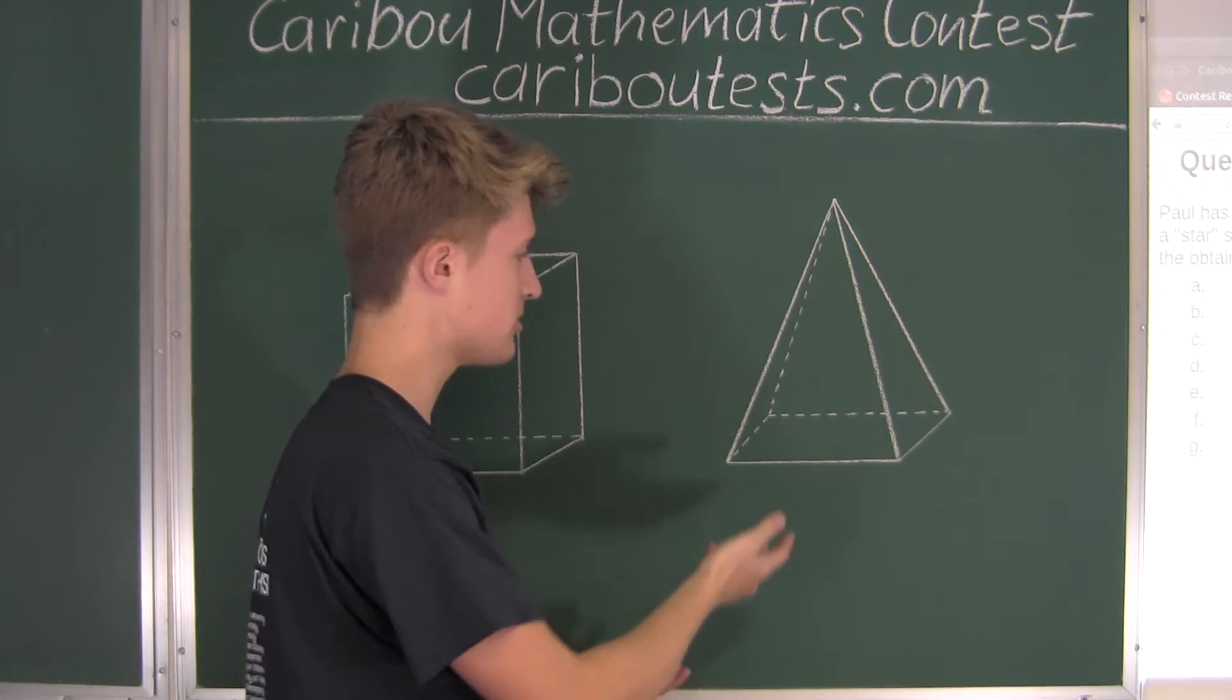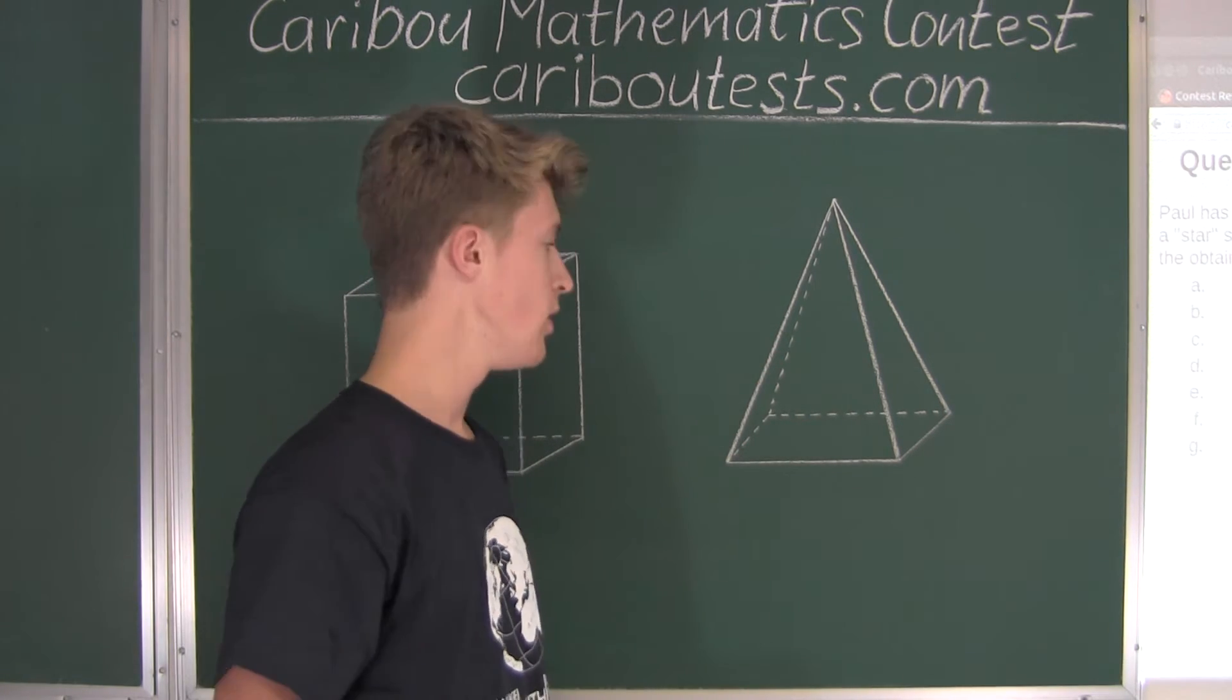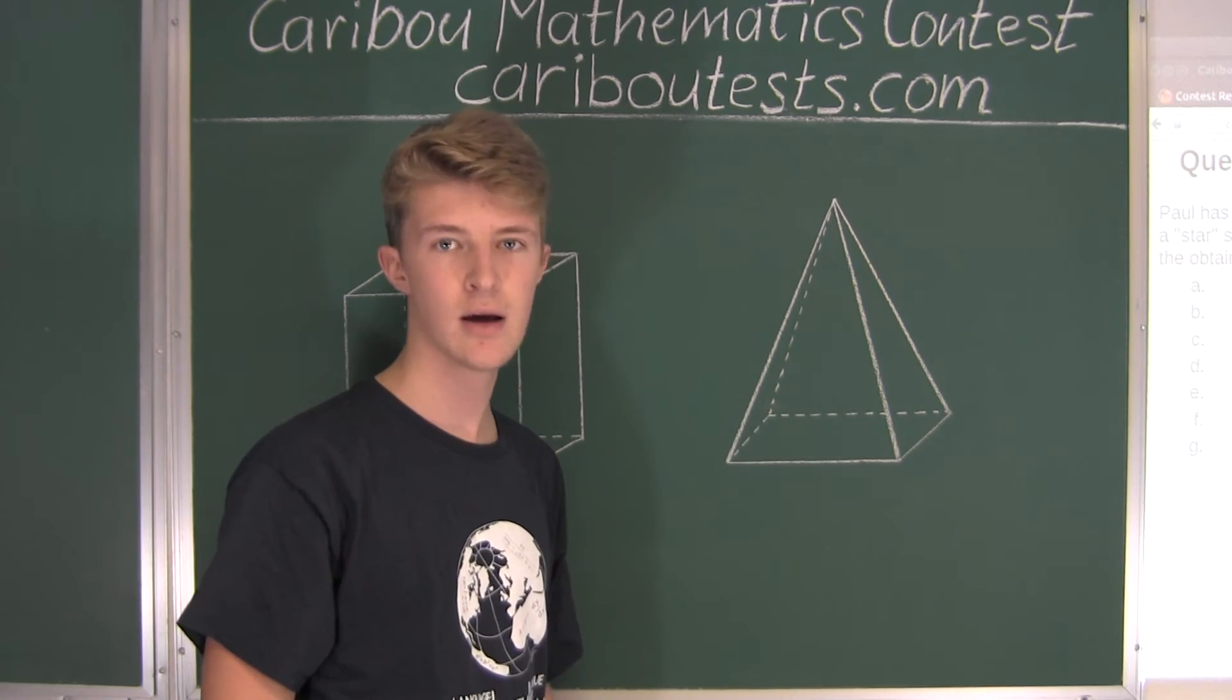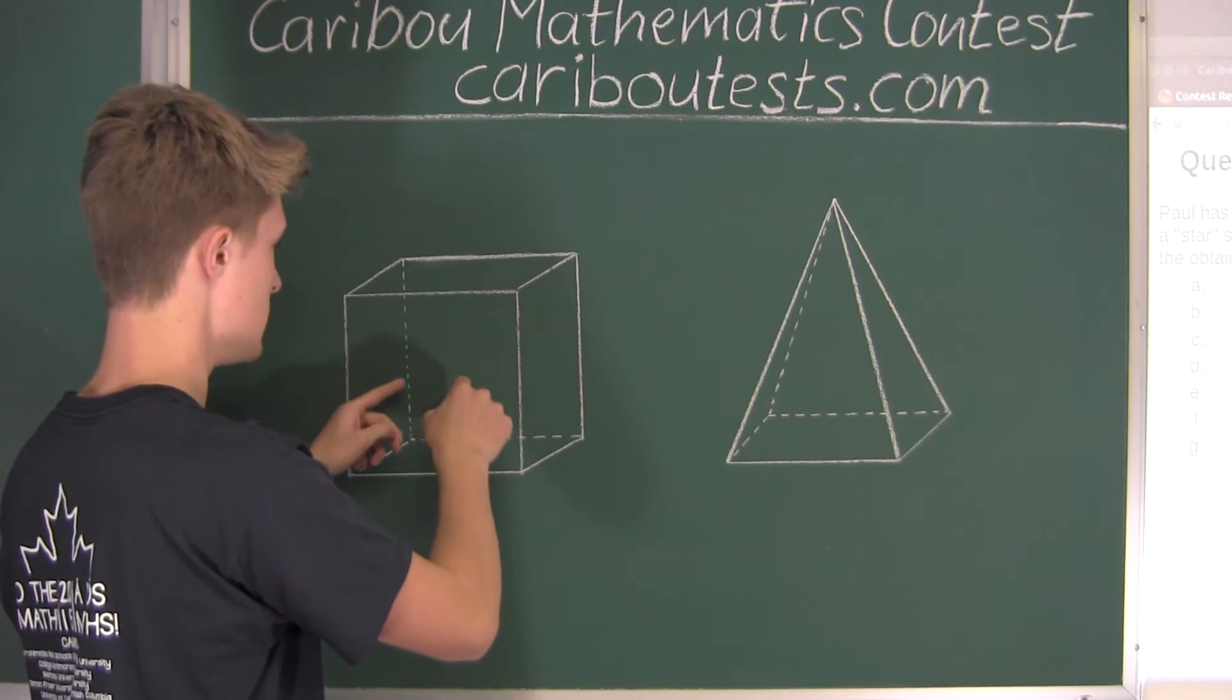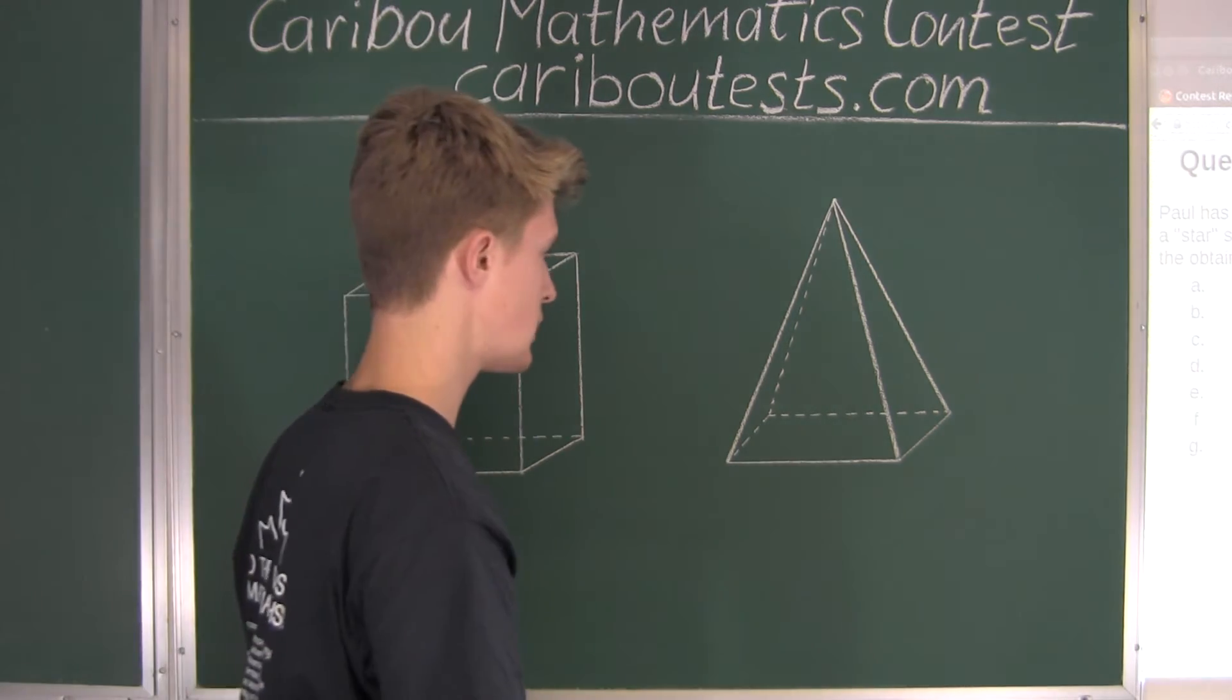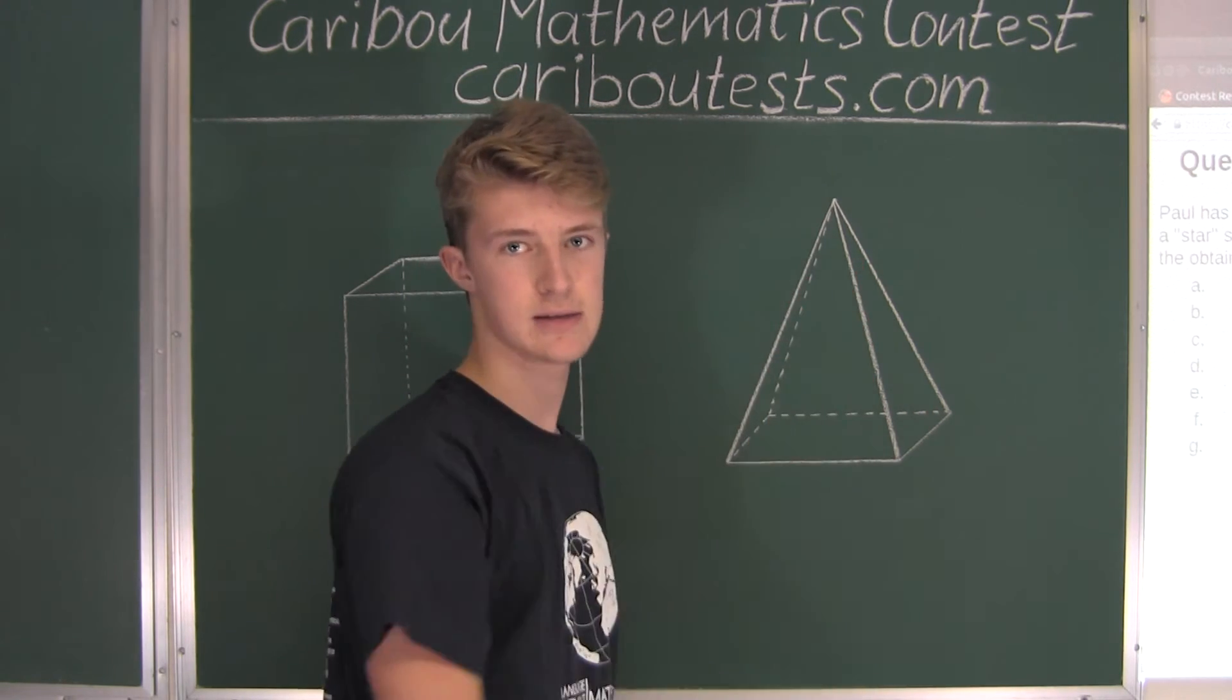Okay, so now we need to see how many faces are on the square base pyramid. Of course, we have the bottom face, which is a square base, but we won't count that because that would be glued onto the cube, so we won't see that face on the outside. That means we just have the one, two, three, four outside side faces.